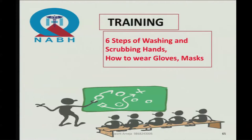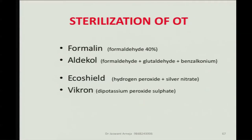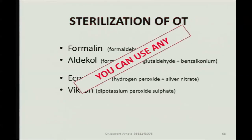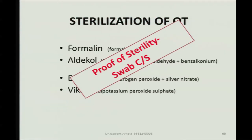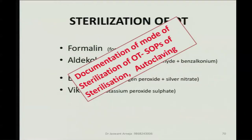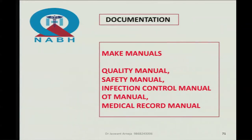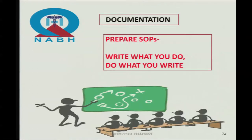For hospital infection control: the six steps of hand washing, scrubbing hands, and how to wear gloves and mask — we all do this, but there should be written documentary proof that everyone follows these six steps. For OT sterility, various agents like Formalin, Aldecol, EcoShield, and Vicron can be used — NABH says you can use any, but what is needed is proof of sterility through swab culture sensitivity. Document the mode of sterilization of the OT and maintain SOPs for sterilization and autoclaving. Then comes documentation — make manuals: quality manual, safety manual, infection control manual, OT manual, and medical record manual. Prepare SOPs: write what you do, and do what you write.